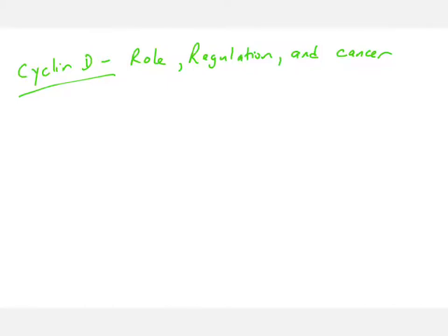In this video, we're going to talk about the roles and regulations of cyclin D, a protein that is very important in controlling the cell cycle and is commonly dysregulated in human cancers. Before we get into talking about human cancers, we have to talk about the normal function and regulation of the cyclin D protein.